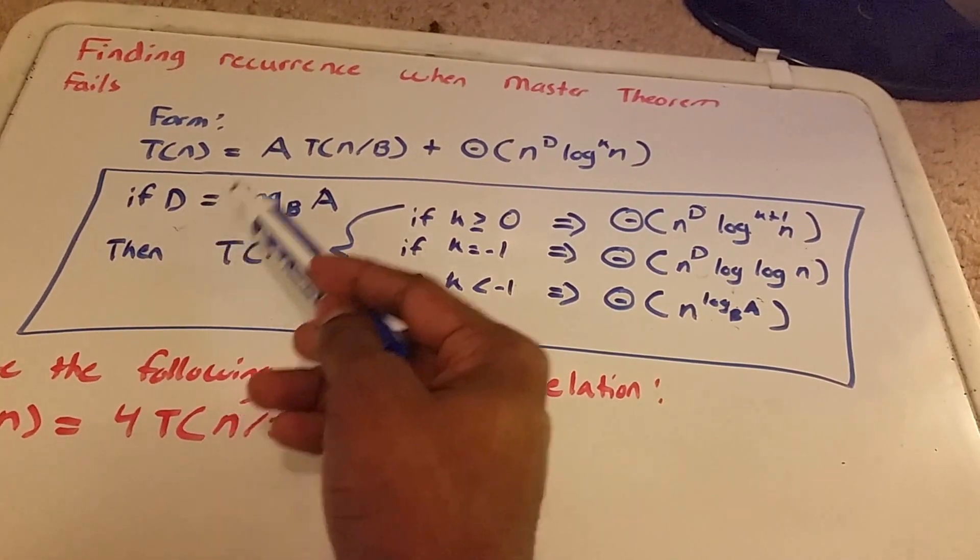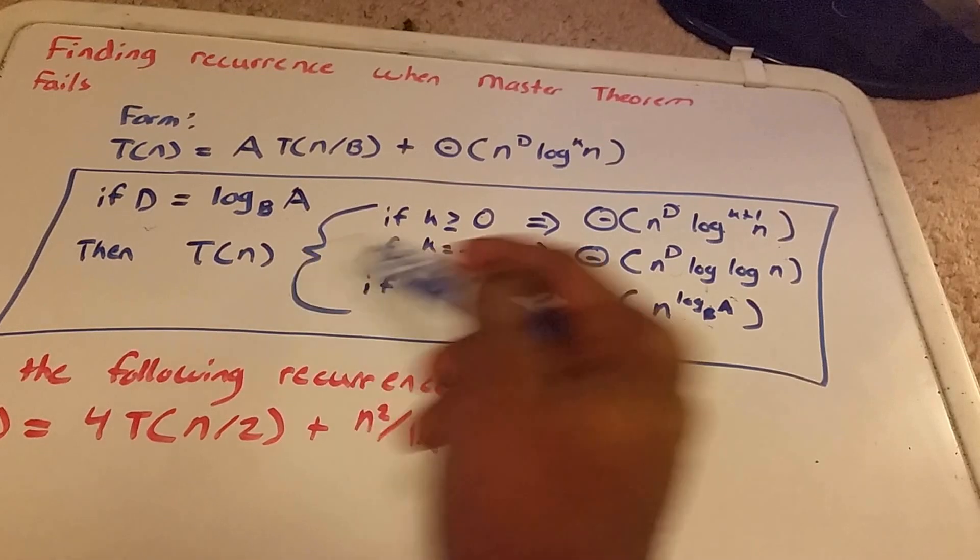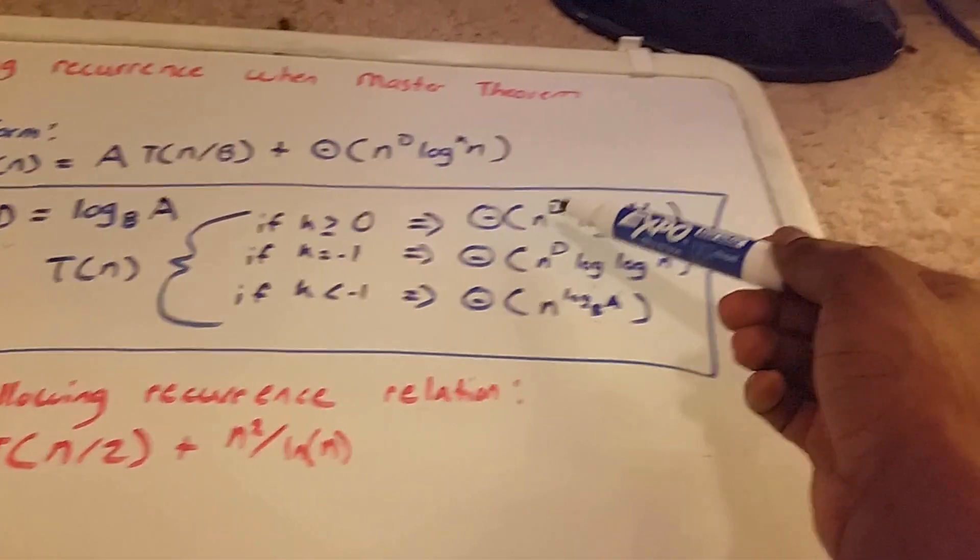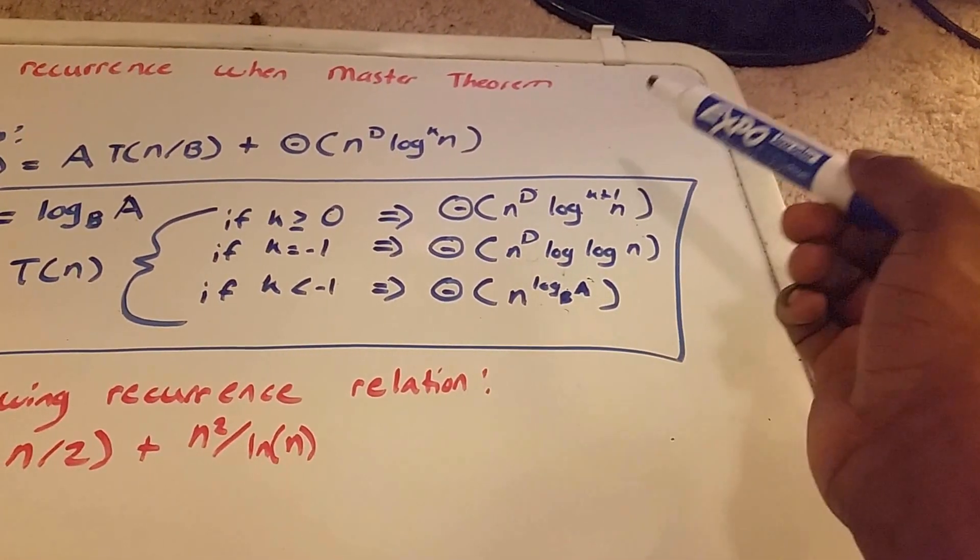So if D is equal to log base B of A, then we can use this here. Then T(n) is big Θ of n^D·log^(k+1)(n).